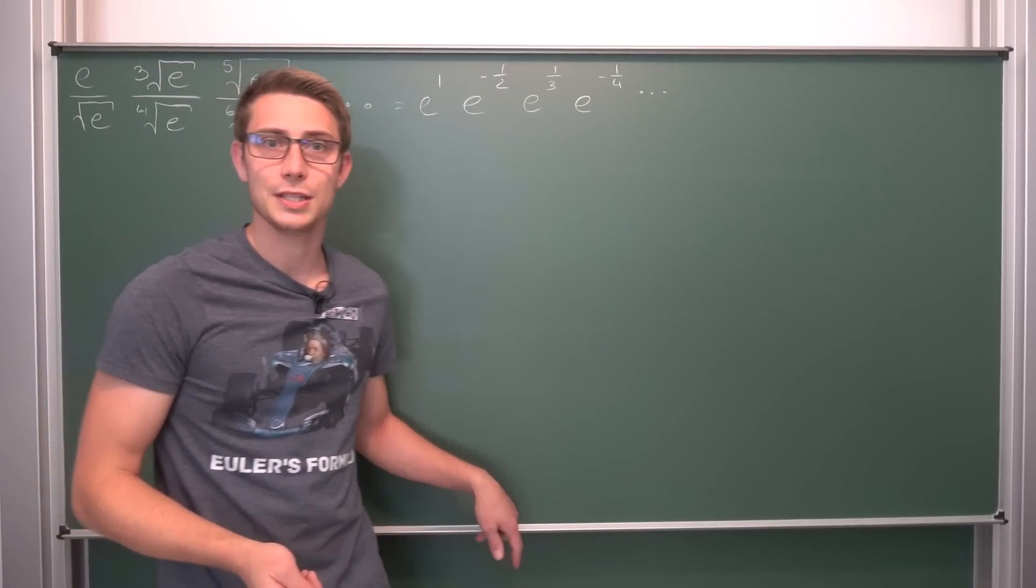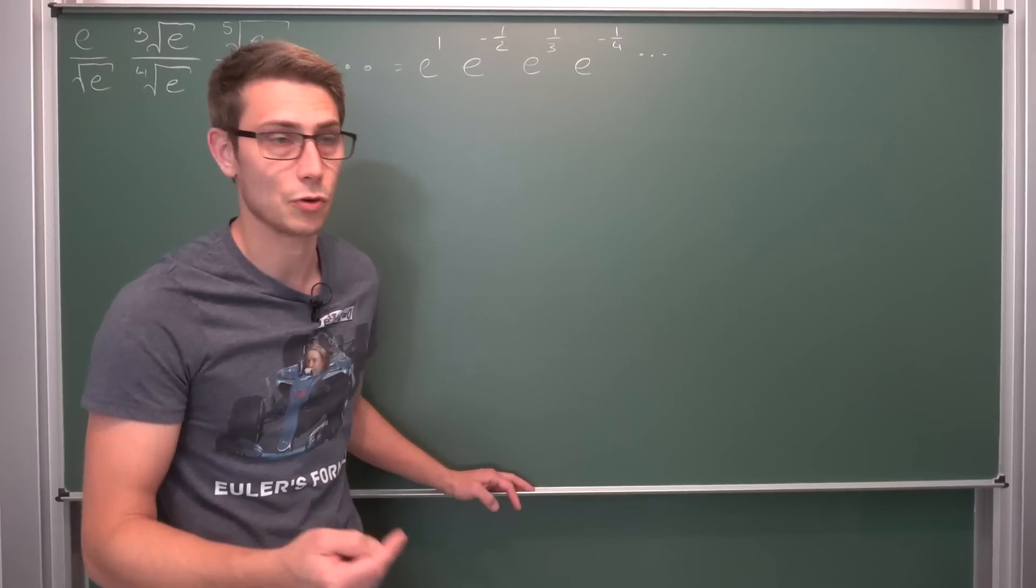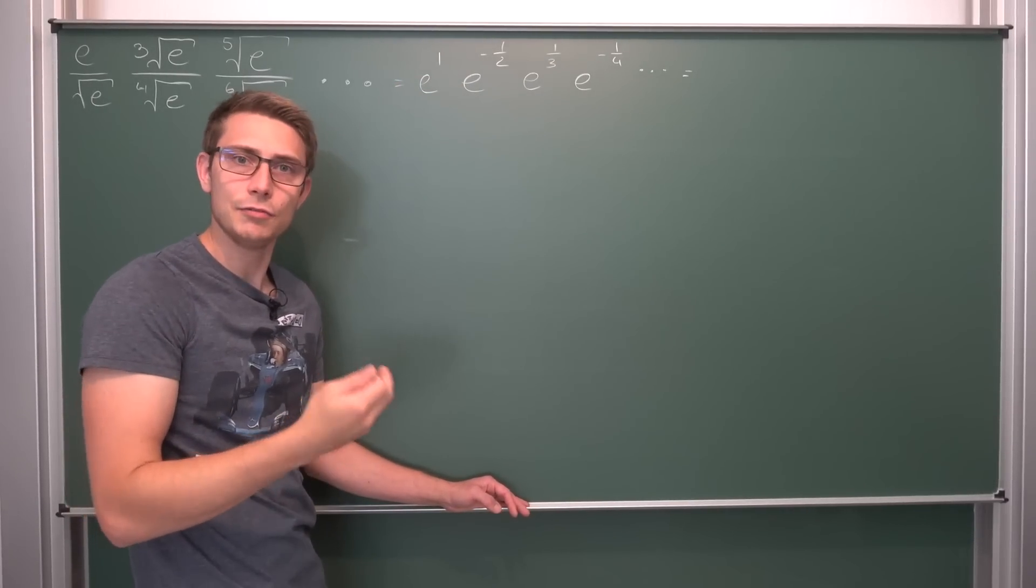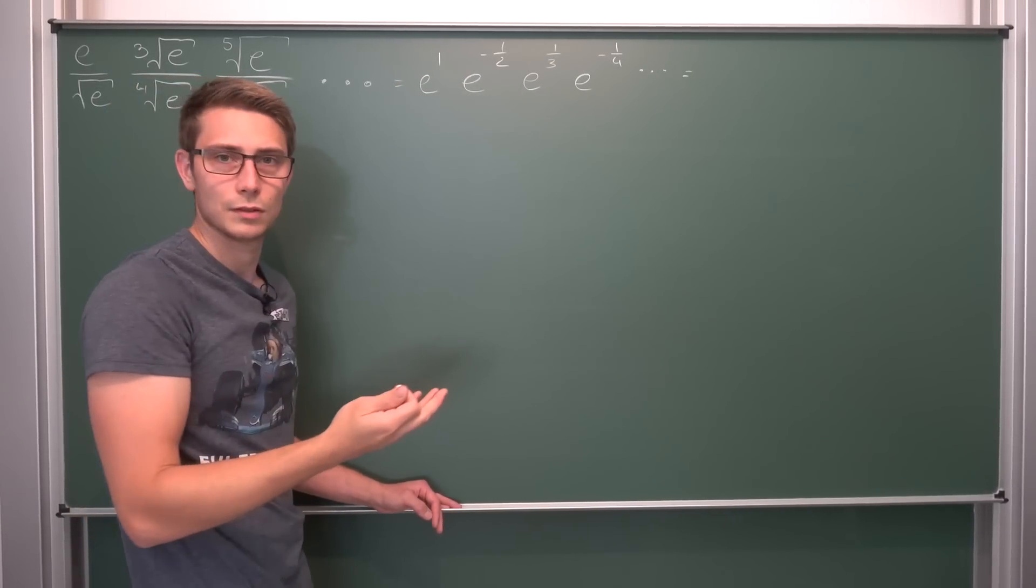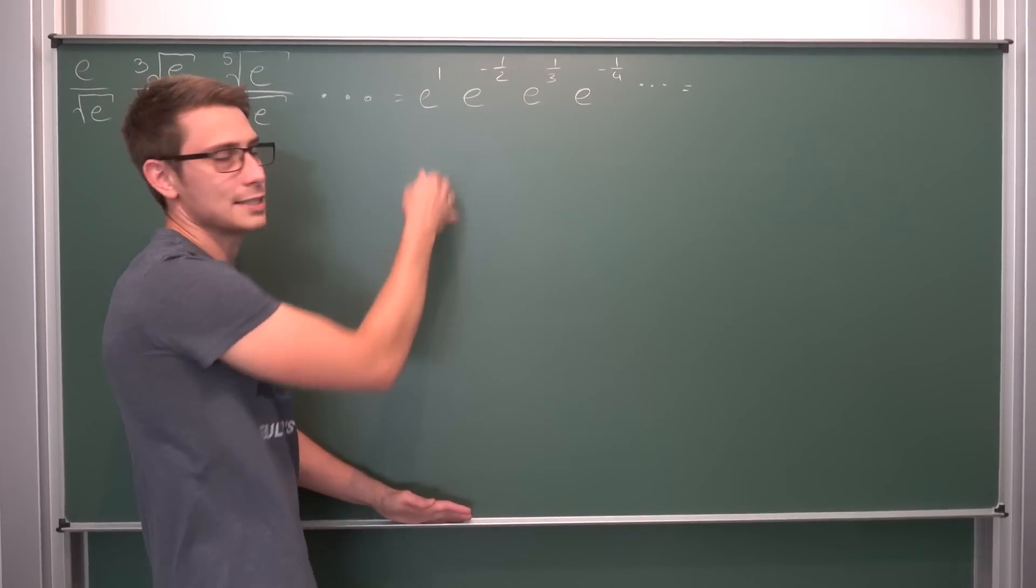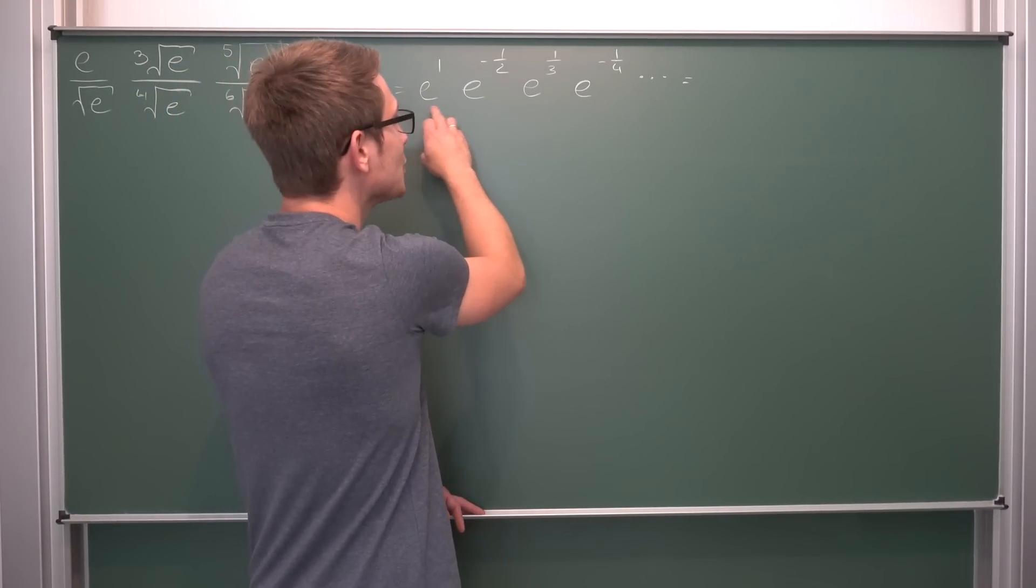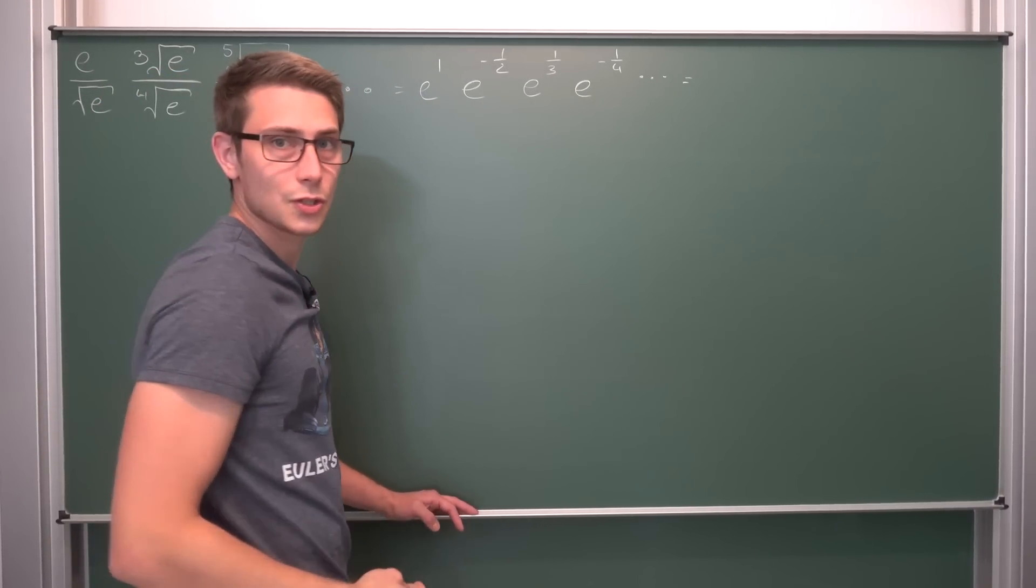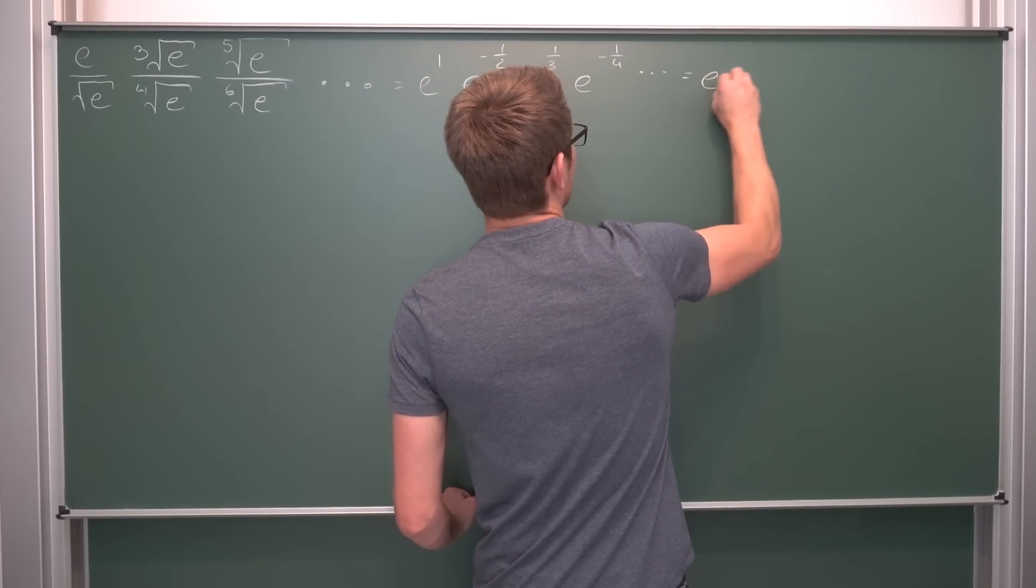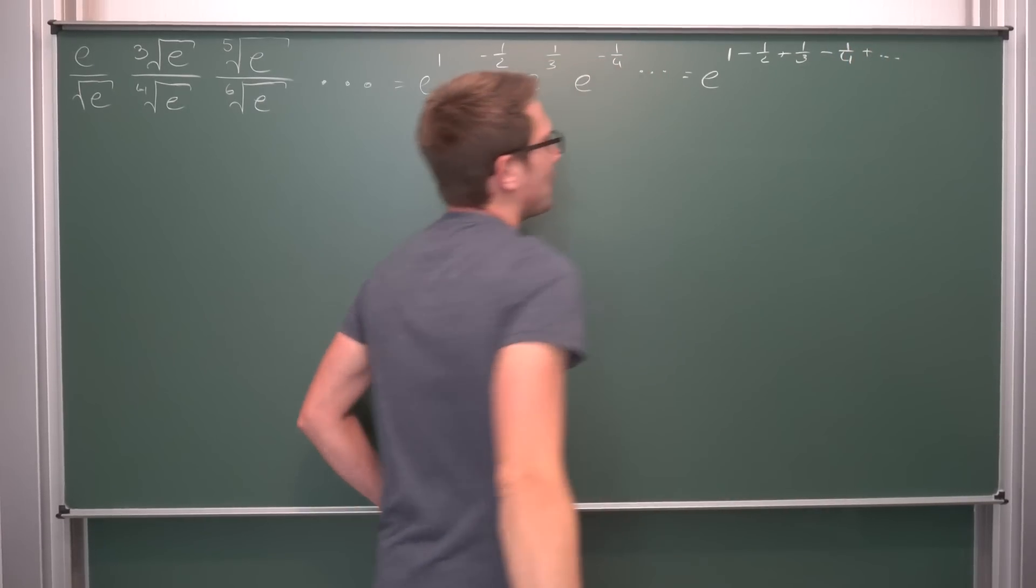Now the cool thing about the exponential function is there's a function equation for it. If you have e to the a times e to the b, it's the same as e to the a plus b. So this leaves us with an infinite sum up in the exponent, turning this infinite product into an infinite sum. Since the exponential function is continuous everywhere in the reals, we can track the limit into the argument.